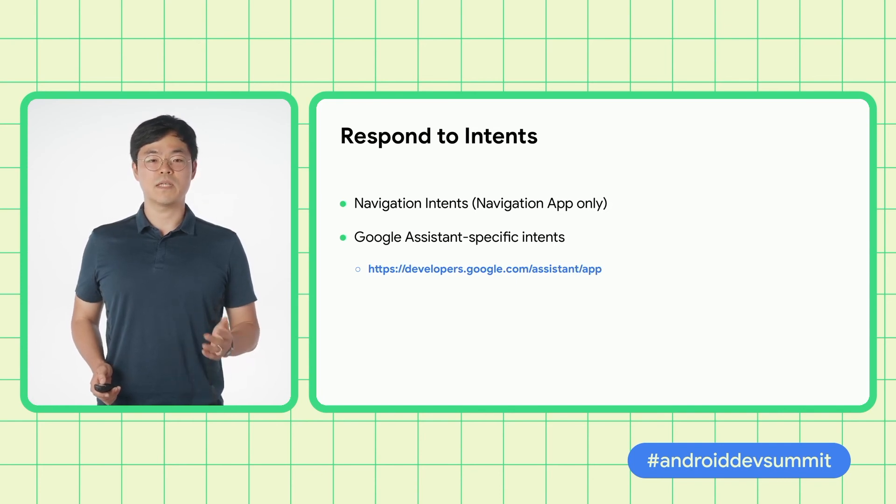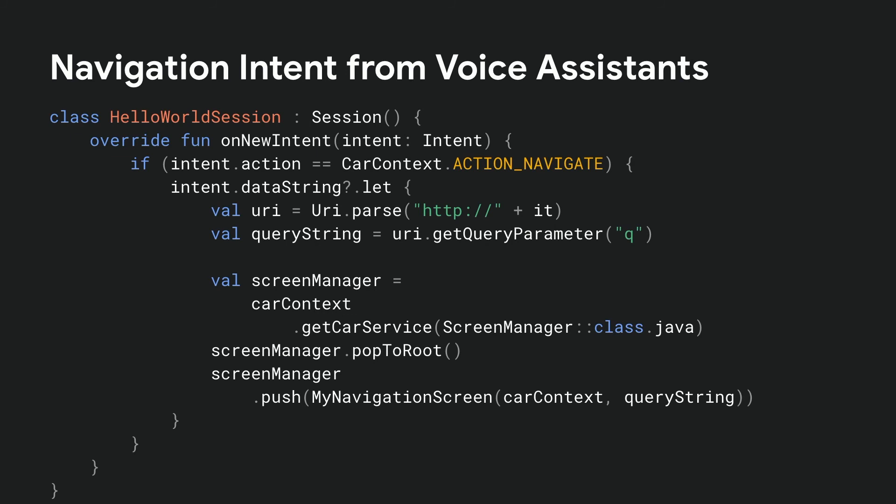We will show you how to handle this intent in the next slide. In addition, your app may receive built-in and custom intents from Android App Actions, just like your phone app. For more information, please refer to the link in the slide. Here, we are handling the intent that we receive in the onNewIntent method. The intent received in onCreateScreen can be handled in the same manner.